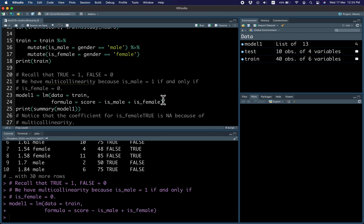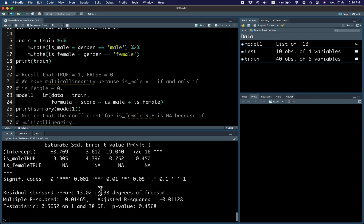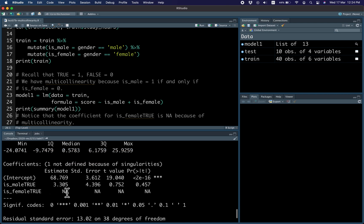When you estimate the model, you'll notice that the coefficient of is_female is true is missing because of the multicollinearity problem.